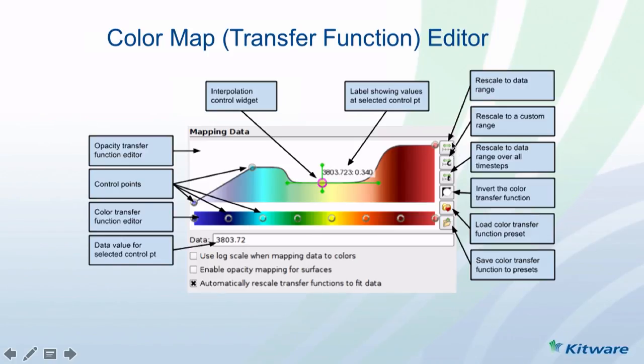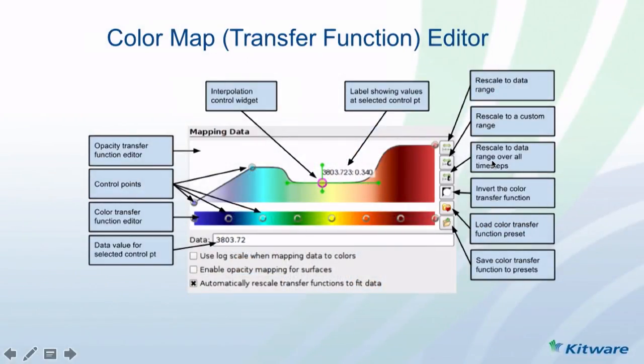You have rescale buttons on the right. You can rescale to data range — ParaView sets a scalar range for one time step and maps that to a range of colors. If you move to the next time step, the scalar range stays the same, so you'll need to rescale the data. You can rescale to a custom scalar range, or rescale to the range for all your time steps. We'll see examples to get a better understanding of how this works.